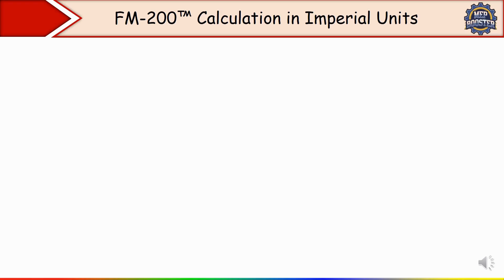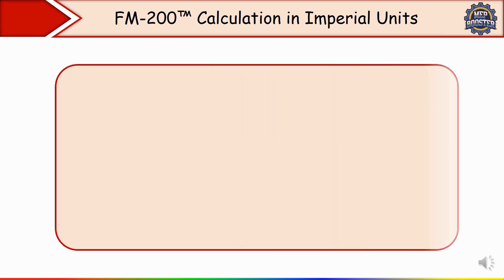Imagine you have a fire in a data center. If you use water, the servers will be destroyed. If you use CO2, people can suffocate. But FM 200 will suppress the fire quickly, leave no damage, and people can still exit safely. That is why in this case we need to go for FM 200.